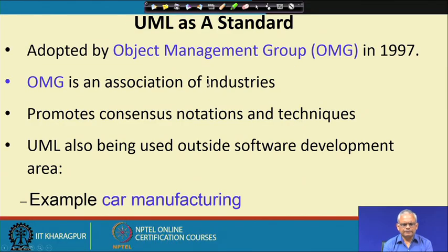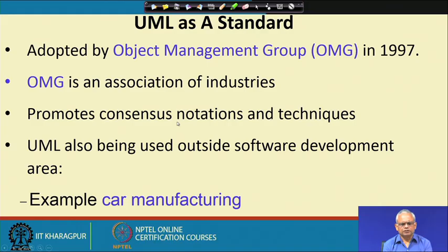The Object Management Group — OMG — adopted UML in 1997. OMG is an association of industries that tries to promote consensus notation and techniques to have uniformity and standardization, though it is not a formal standardization body. It can adopt its own notations so that they become popular and ultimately lead to standardization.